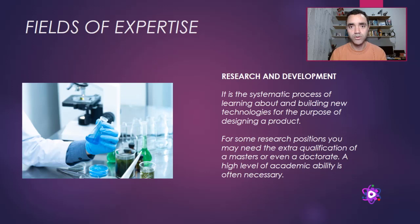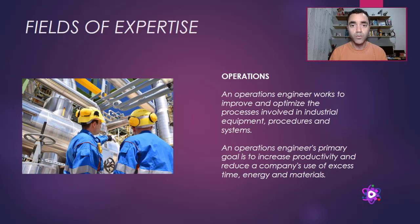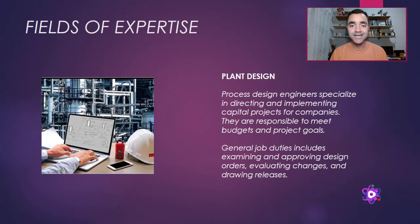The first one is research and development. This field of expertise is related to the development of products in a lab or pilot scale. Most often, the job requirements ask for master's or doctorate degrees because a high level of academic ability is required. The second one is operations. As a chemical process engineer working in operations, your main duty is to improve and optimize processes, and your main goals are to increase productivity and reduce the losses of the company.